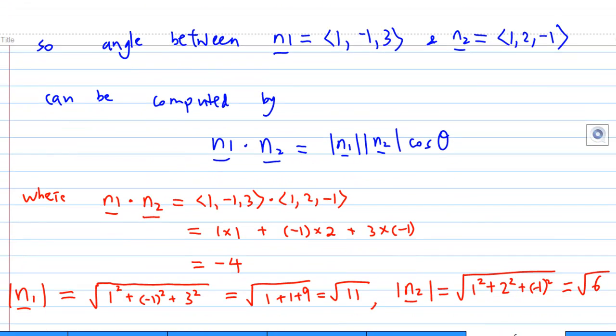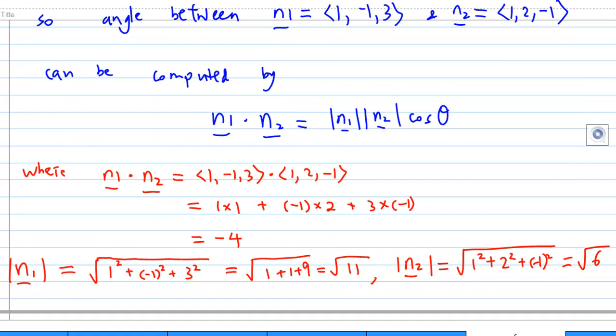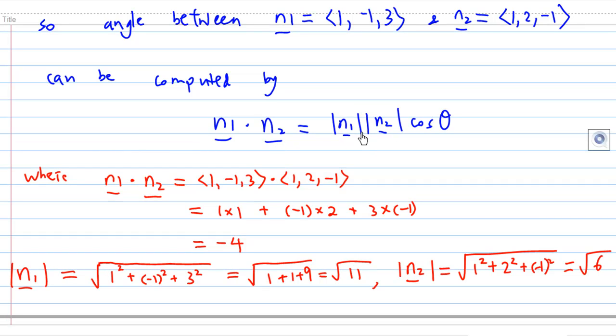Making use of that, n1 dot n2 will be the length of n1 times the length of n2 times cosine theta, where theta is the angle between n1 and n2, which is also the angle between the two planes.